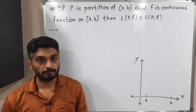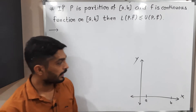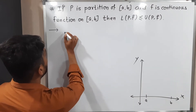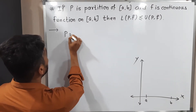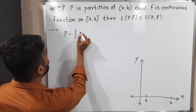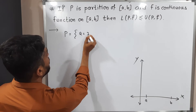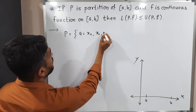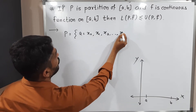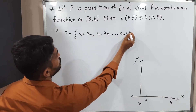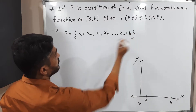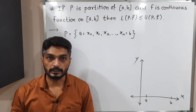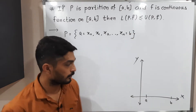We are going to prove it. So, P is a partition of the closed interval [a, b]. I am considering P equal to a = x0, x1, x2, and so on, xn = b, as a partition of the closed interval [a, b].